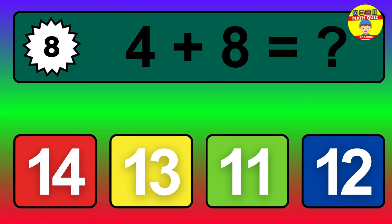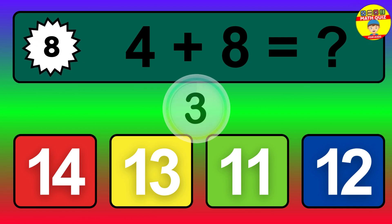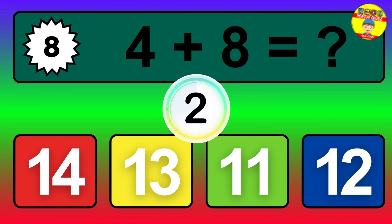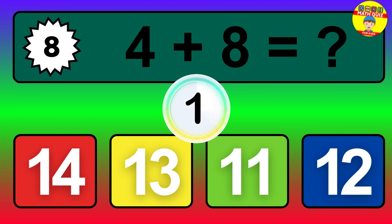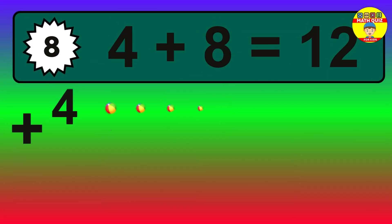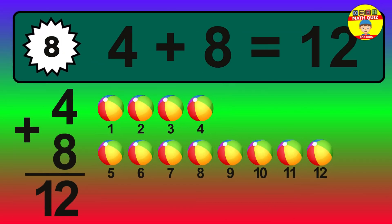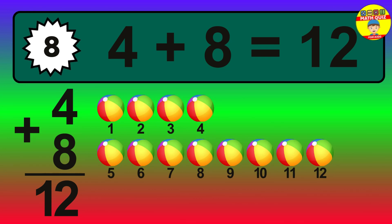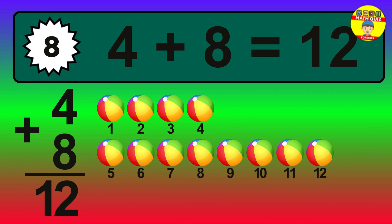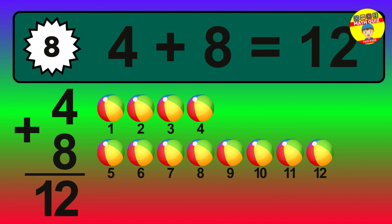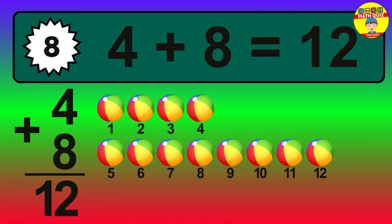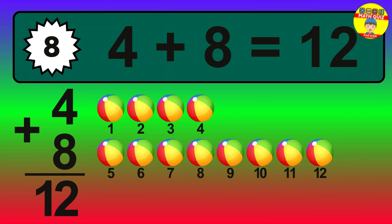Question 8. 4 plus 8 equals what? The answer is 4 plus 8 is 12. Let's count it: 1, 2, 3, 4, 5, 6, 7, 8, 9, 10, 11, 12.